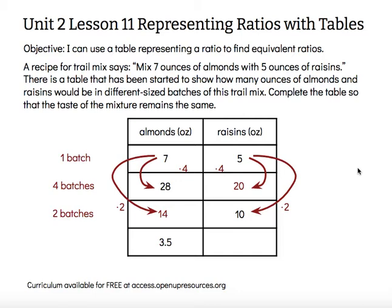The last row has 3½ in it, and I'm going to think to myself: how do I turn 7 into 3½? The number's smaller, so I'm going to be dividing or multiplying by a fraction, and 7 divided by 2 is 3½. So I'm making a half-size batch of my trail mix — a smaller batch, maybe for a shorter hike or for a smaller number of people. So I need to take the 5 ounces of raisins and also cut that in half, and I would only need 2½ ounces of raisins to maintain the same flavor of salty and sweet.